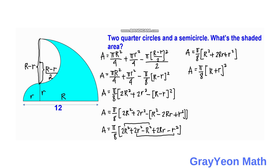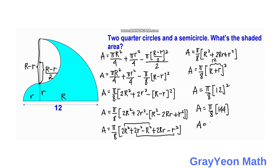Since R plus r equals 12, we substitute: area equals pi over 8 times 12 squared, which is pi over 8 times 144. Since 144 divided by 8 equals 18, the final answer is area equals 18π square units. This completes the first method.